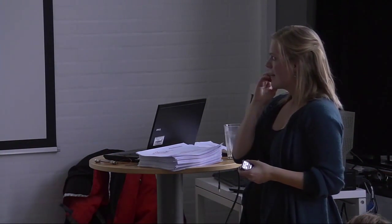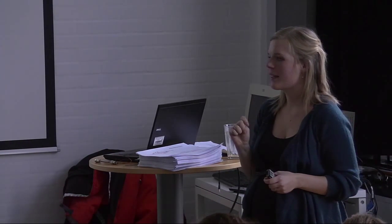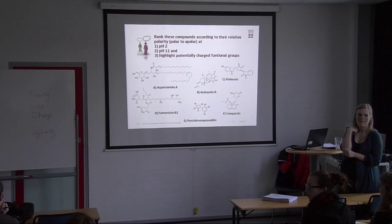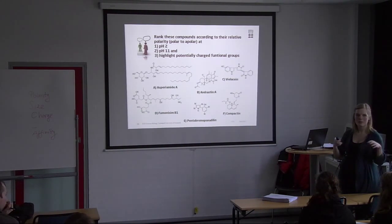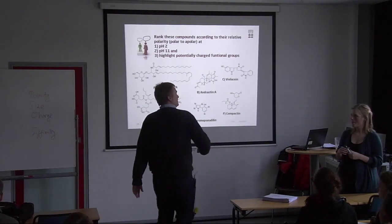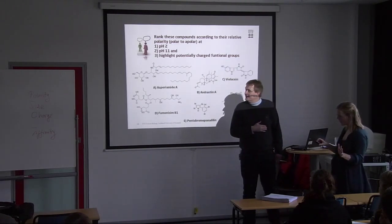We'll start with a little exercise and have a break afterwards. We've printed out the exercises — what we want you to do is rank these natural compounds according to their polarity, both at high pH and low pH. You need to identify the potential functional groups that can be charged at different pHs. We'll go through the exercise afterwards. About 15 to 20 minutes — take the break and exercise together.